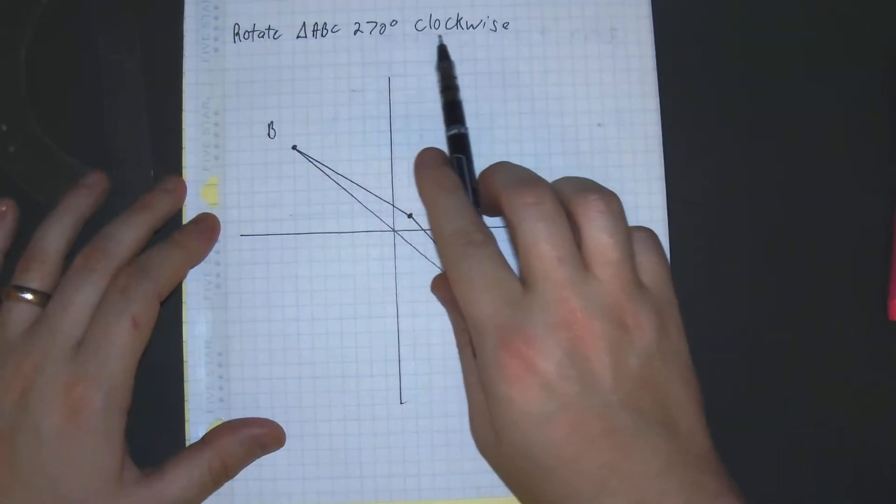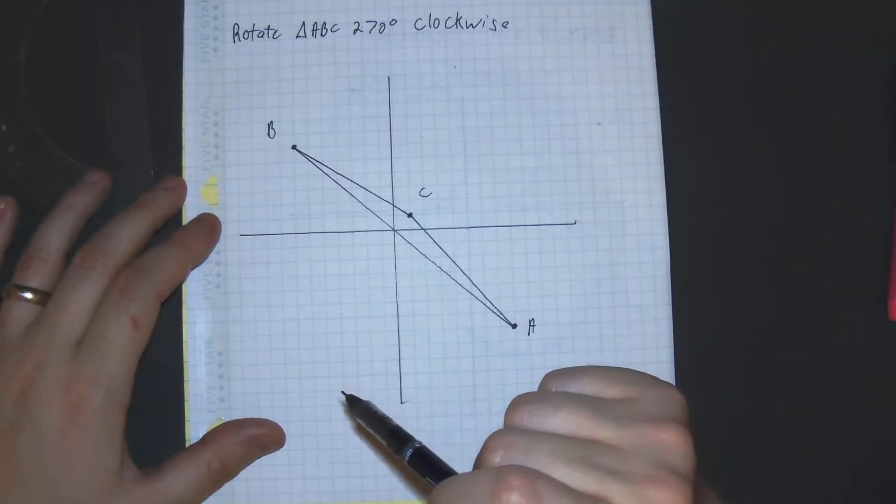Rotate triangle ABC 270 degrees clockwise.